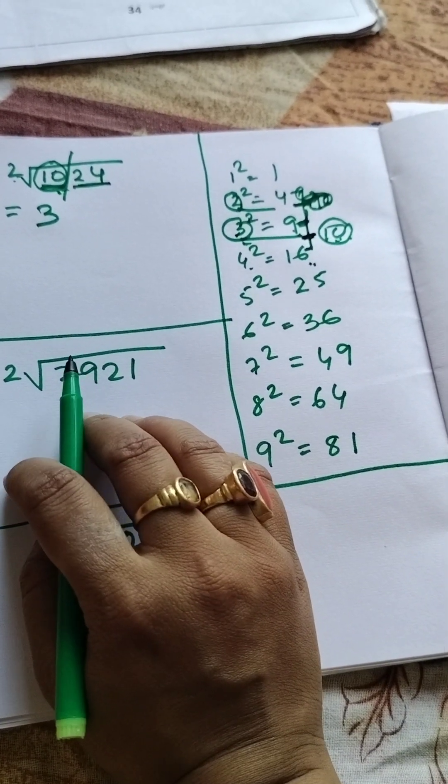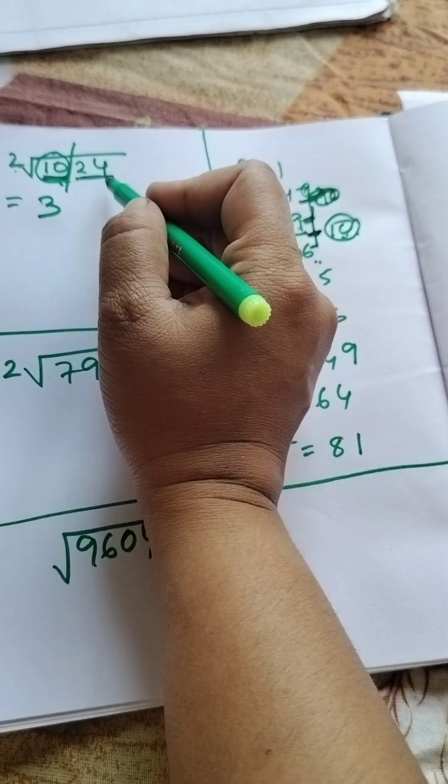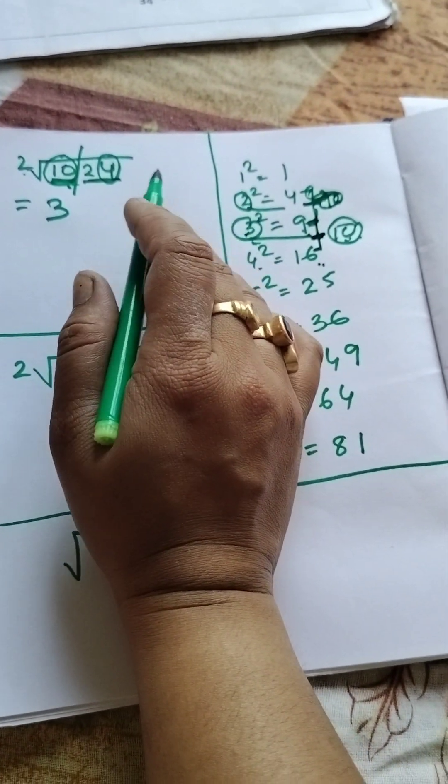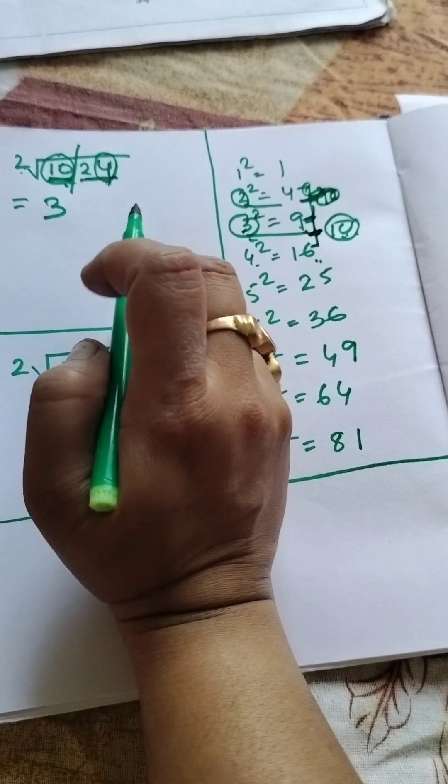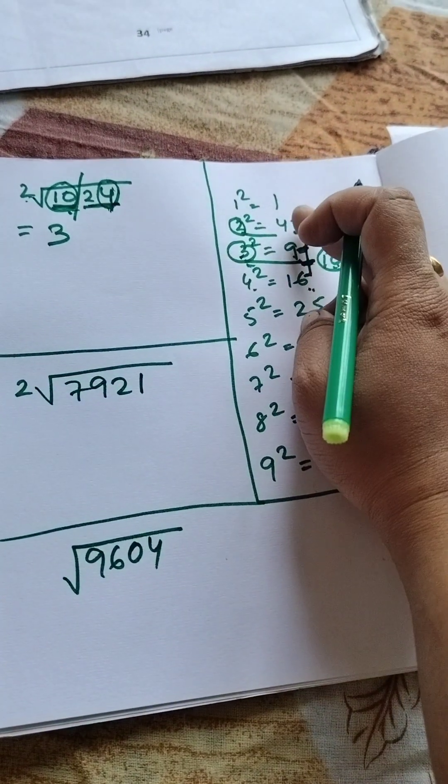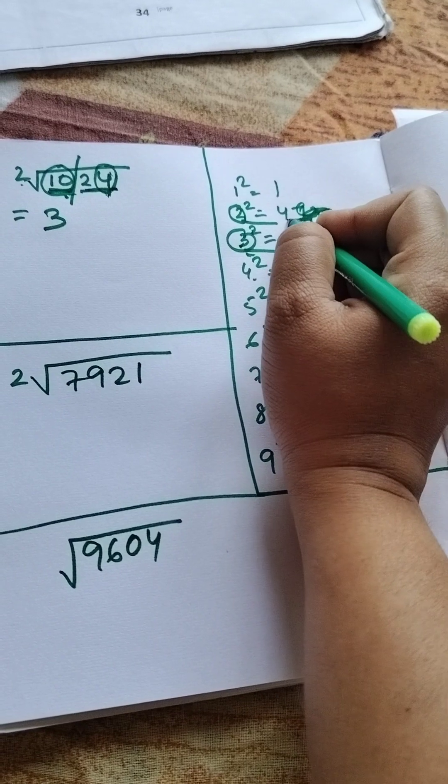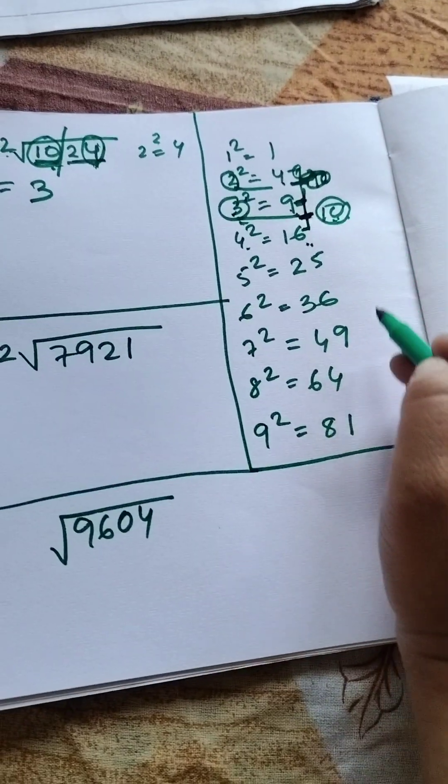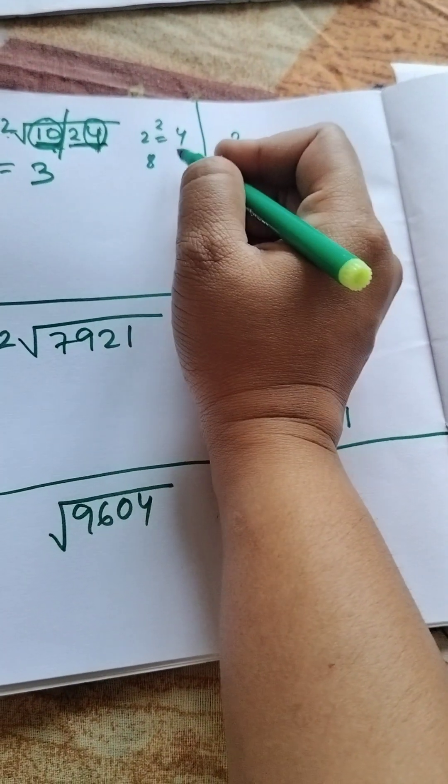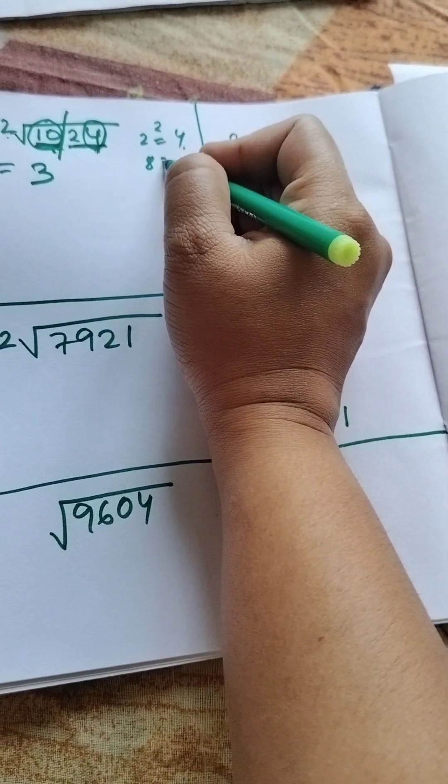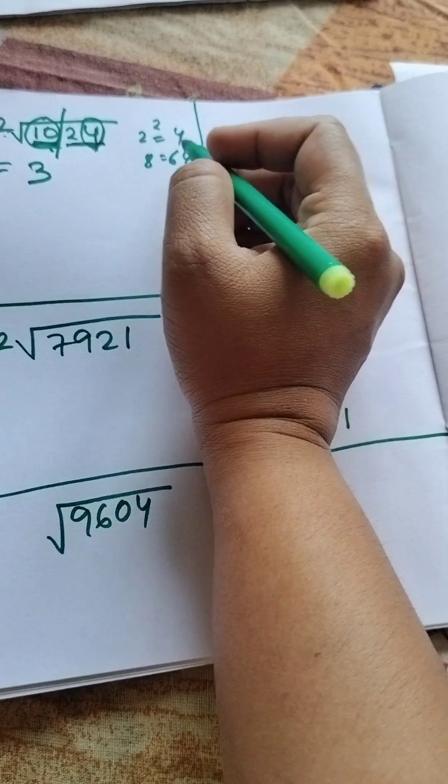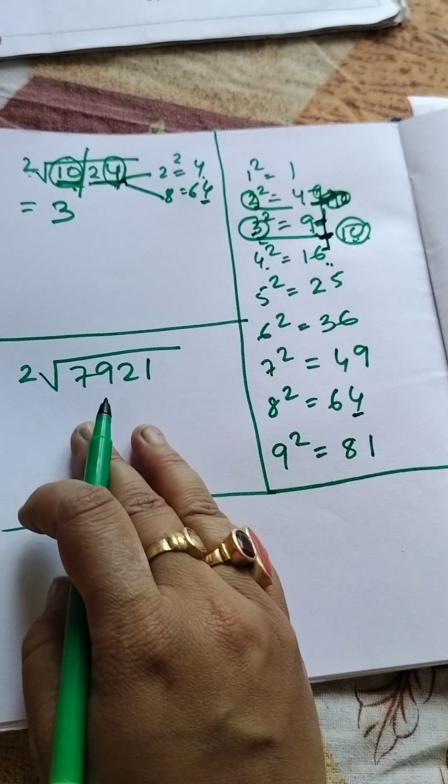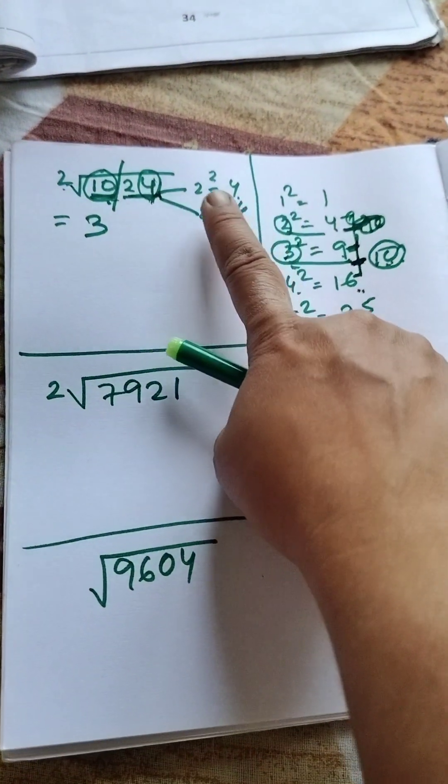In the second step, you have to follow the last digit, the 4. What do you have to follow in the second step? 4 is the following. 4 is in which square? 2 squared is 4, and 8 squared is 64. This number is 2 or 8. How do you decide? Will it be 2 or 8?